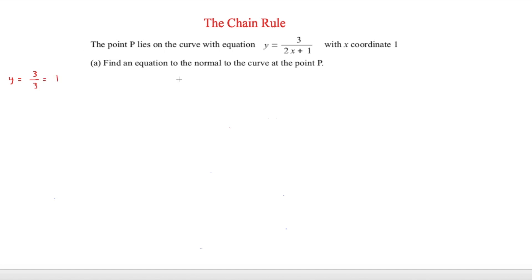Next we need the gradient of the tangent, then take the negative reciprocal for the normal — and we'll use the chain rule. We rewrite y equals 3 over (2x plus 1) as y equals 3 times (2x plus 1) to the minus 1. We can leave the 3 aside for now. Since it's a constant, we don't need the product rule. Setting u equals 2x plus 1, we have y equals u to the minus 1.